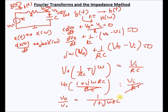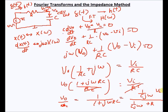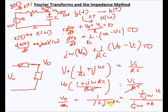We got the same expression. If I rearrange the math, I can write it as 1/(CjΩ) divided by (1/(CjΩ) + R), which is a voltage divider relationship — one impedance R in series with another impedance 1/(jωC). So you can see that the impedance method is directly obtained by taking the Fourier transform of the differential equation.